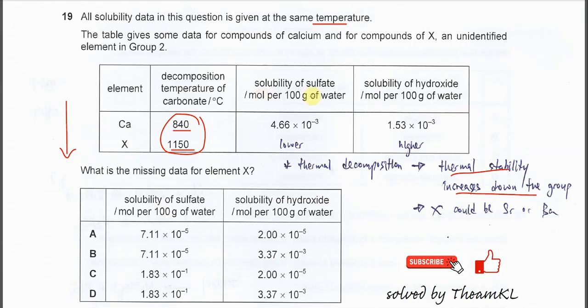The calcium sulfate solubility is 4.66 times 10^-3. We know that the solubility of Group 2 sulfate decreases down the group, meaning strontium or barium sulfate should have a lower solubility compared to calcium sulfate. So we need to get smaller values than this.